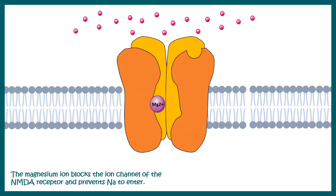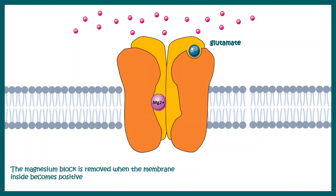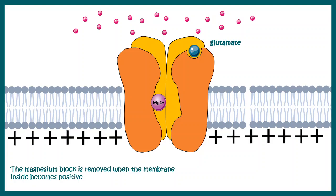The magnesium ion is present in the pore of NMDA receptor, and that is how it doesn't allow sodium ion to get in. Generally, when glutamate binds, sodium ion should get into the channel, but it is repelled by the magnesium block. The magnesium block is removed when there is a substantial positive charge inside the membrane — that repels the magnesium block, and the way is clear for the sodium ion to come in. This is how the NMDA receptor works.